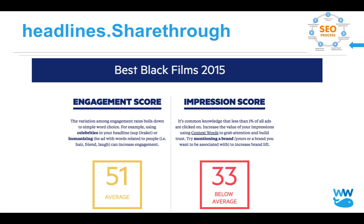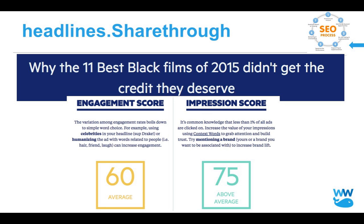With Headlines.sharethrough, we can test headlines. Let's say 'Best Black Films of 2015' — it's looking at about 300 factors to give us an engagement and impression score. It's suggesting we could do a better job with our title ideation. Here's a little change: 'Why the 11 Best Black Films of 2015 Didn't Get the Credit They Deserve' — suddenly we have a much higher level of engagement as well as impression score. It's still a list of 11 best black films of 2015, just phrased differently. The difference that can have is amazing. You can look at Upworthy's editorial process — how important it is to write 25 different headlines just to ideate.